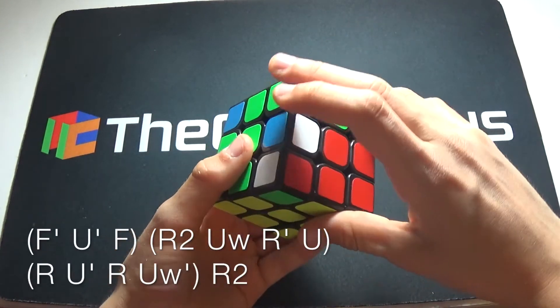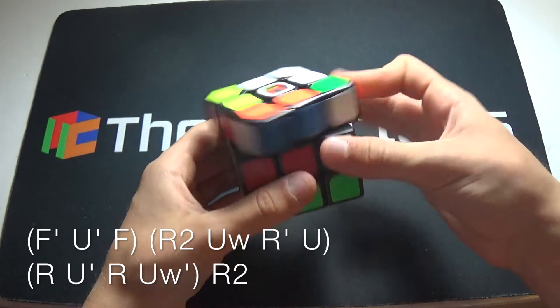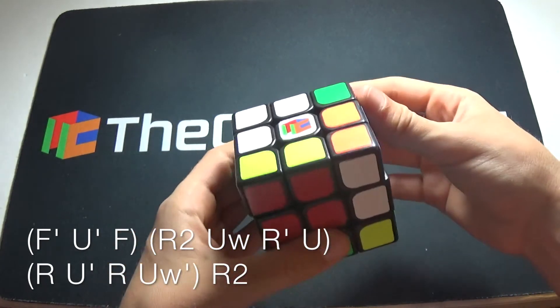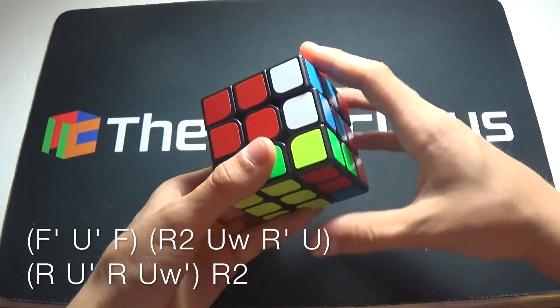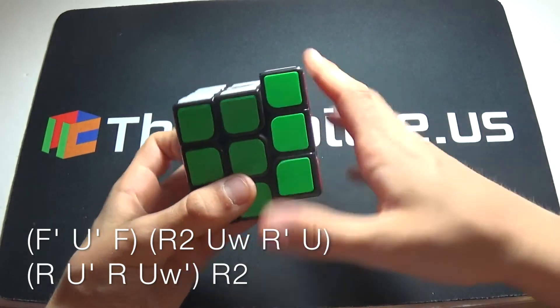You go F' U F, R2 U' U R' U R' U R' U' U' R' U' U' R' U' R' U'.